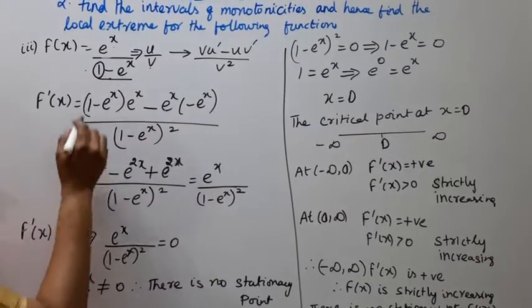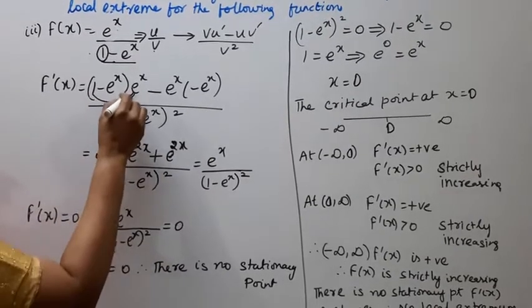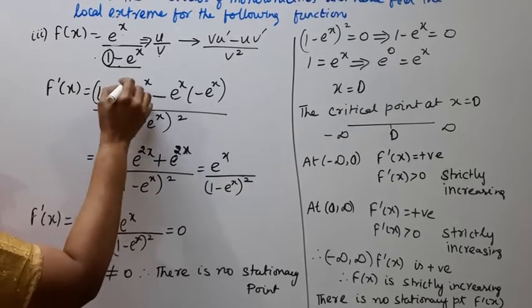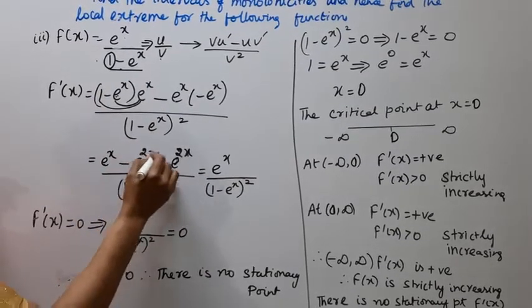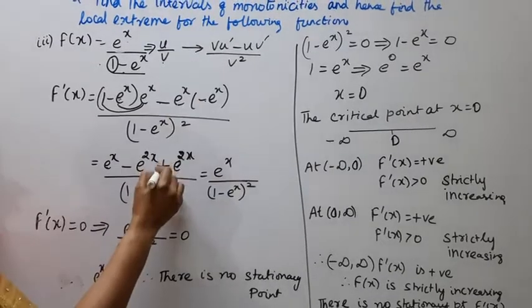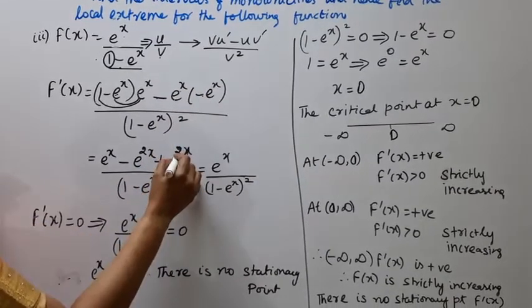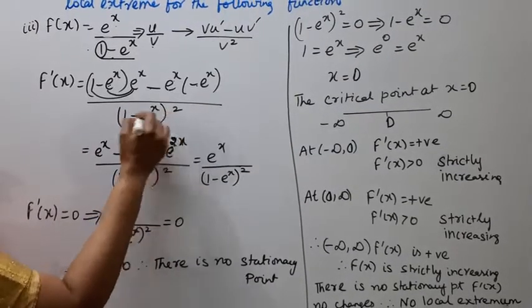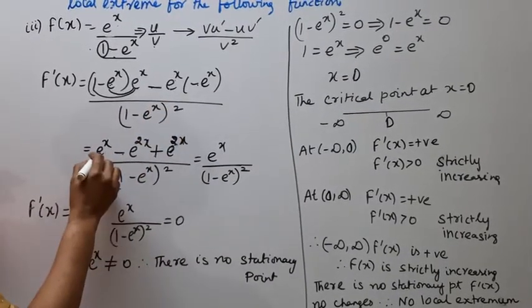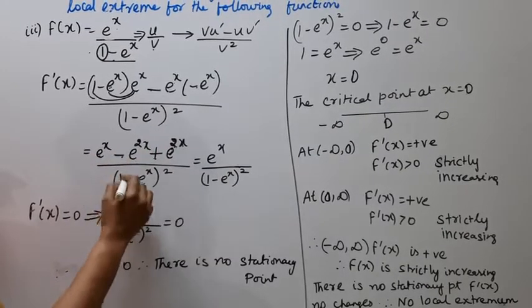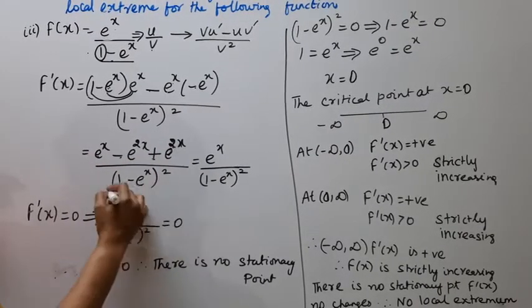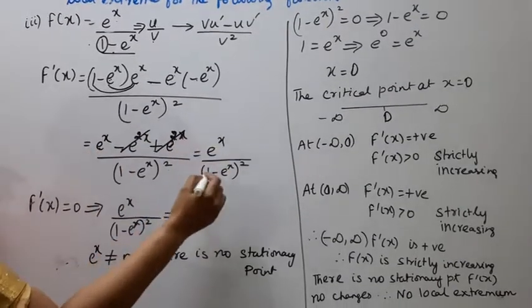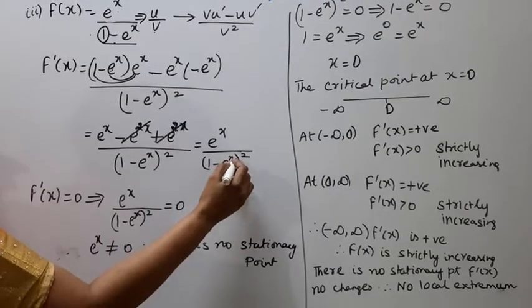Expanding the numerator: (1 - e^x)·e^x - e^x·(-e^x) = e^x - e^(2x) + e^(2x), since minus times minus is plus. The e^(2x) terms cancel, leaving numerator = e^x. Wait — simplifying: -e^x - e^(2x) + e^(2x) = -e^x. So f'(x) = -e^x / (1 - e^x)².